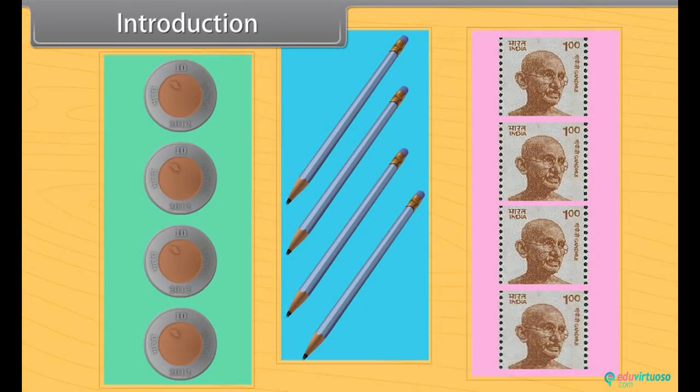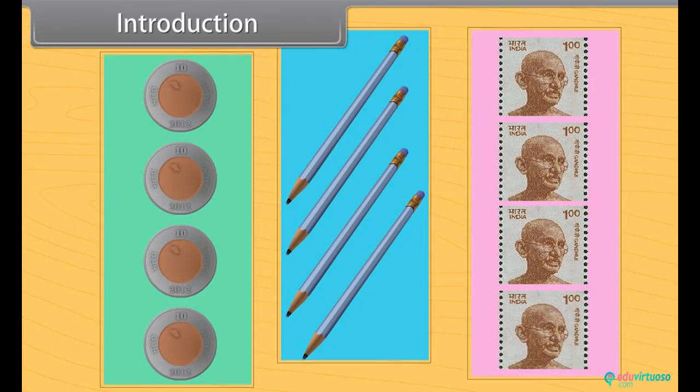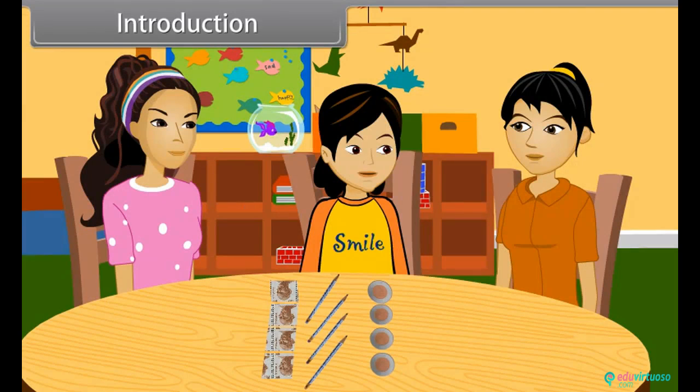Sonali, can you see these three collections? These are the sets. But how do you say that these are sets? A set is a collection of things which has something in common. Come, I will explain you more about sets.